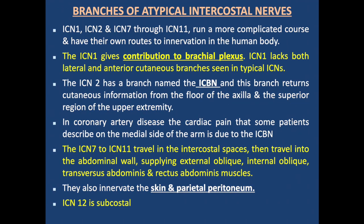The atypical intercostal nerves — 1st, 2nd, and 7th through 11th — run a more complicated course. The 1st intercostal nerve contributes to the brachial plexus and lacks both lateral and anterior cutaneous branches. The 2nd intercostal nerve has the intercostobrachial nerve branch, which returns cutaneous information from the floor of the axilla and the superior upper extremity — notably, cardiac pain on the medial arm in coronary artery disease is mediated by this nerve. Nerves 7–11 travel through the intercostal space into the abdominal wall, supplying the external oblique, internal oblique, transverse abdominal, and rectus abdominal muscles, as well as the skin and parietal peritoneum. The 12th intercostal nerve is subcostal.